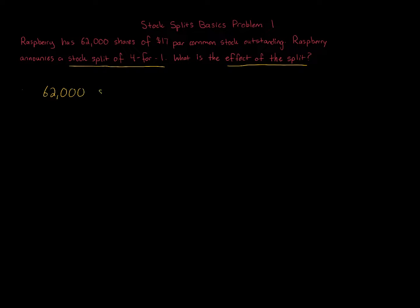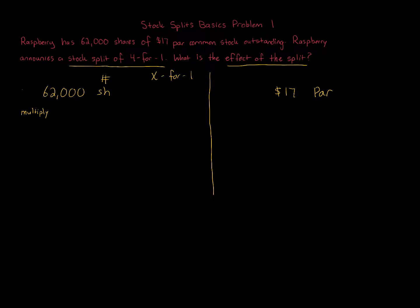Here we're told there are 62,000 shares and a $17 par. What I like to do is put a line in the middle — the number of shares on one side and the par amount on the other. When you're told a stock split, you'll be told an X-for-one ratio, and usually X is greater than one, but it could be less. You are going to multiply the number of shares outstanding by X, and then for the par you are going to divide by X.